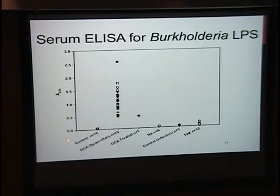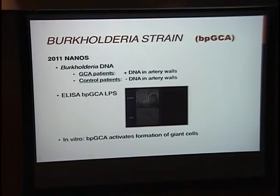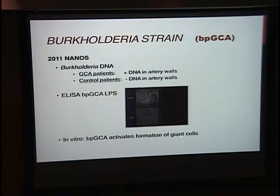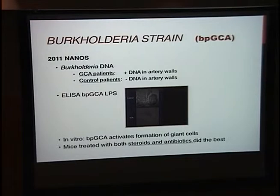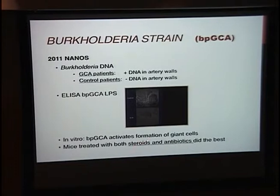Dr. Koenig actually tested his own blood, and his value was about 50 picograms per milliliter, just as a reference. In the basic science research, they were able to isolate the organism in vitro and show that it can activate giant cells by activating dendritic cells. Dr. Di Domenico, a hematologist who did much of this research, was able to induce vasculitis in mice with this bacteria, and then treated them with steroids and antibiotics. Treating them with both steroids and antibiotics seemed to help the mice do better than steroids alone or no treatment.